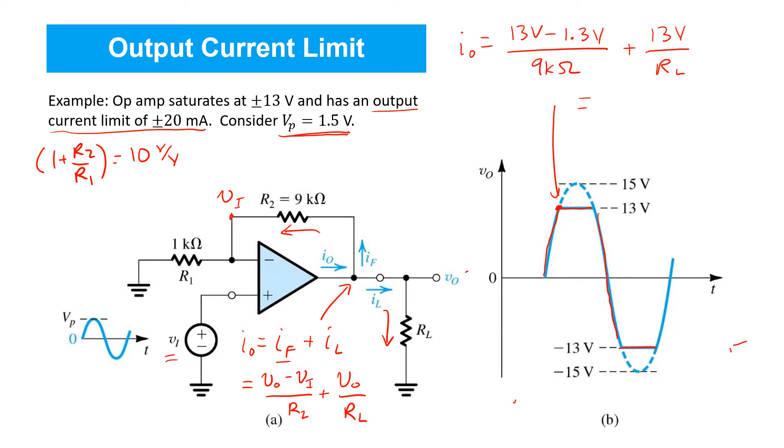Now, if we plug these numbers into a calculator, we'd find that the current flowing through R2 in this circumstance is 1.3 milliamps. So in order to respect the output current limits of the op-amp, we need to ensure that this second term, 13 volts over RL, is less than the remaining output current limit of the op-amp, after we take into account this 1.3 milliamps, that is, it's got to be less than 18.7 milliamps in order to observe the output current limit of the op-amp. This places a lower limit on the value of RL. RL has to be greater than 13 volts over 18.7 milliamps, which is about 695 ohms in this case.